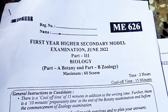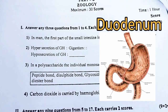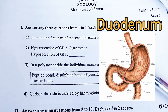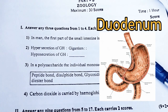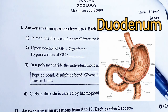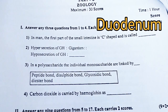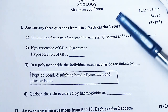The first part of the small intestine is C-shaped and is called the duodenum.